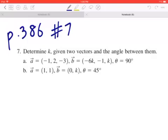Determine k given two vectors and the angle between them. Part A: Vector A is (-1, 2, -3), Vector B is (-6k, -1, k), and the angle between them is 90 degrees.